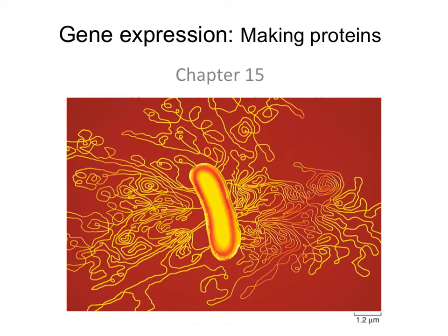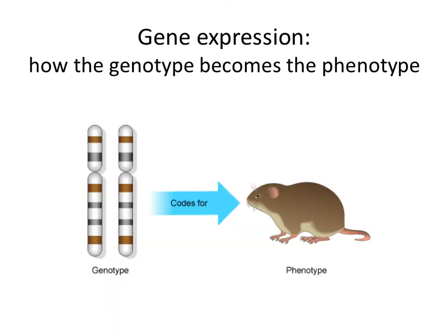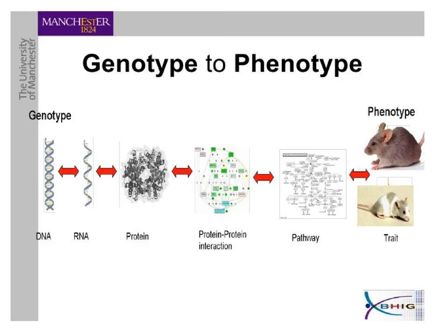We're going to study how our genes are expressed — this is the process in which our genotype actually becomes our phenotype, and this happens in the process of making proteins. In reality, all our genes code for is the instructions for how to make the proteins that we use in all our body functions. Because of gene expression, our genotype becomes the phenotype. The genes we inherited from our parents code for the phenotype that will be expressed.